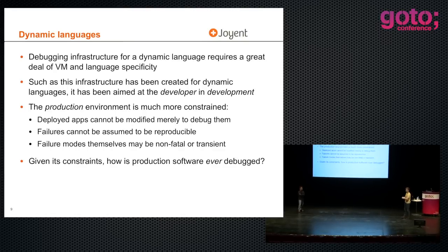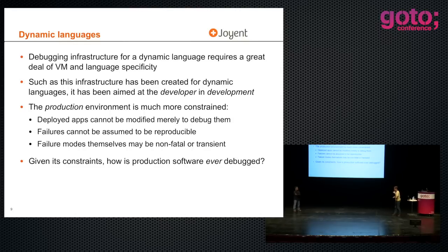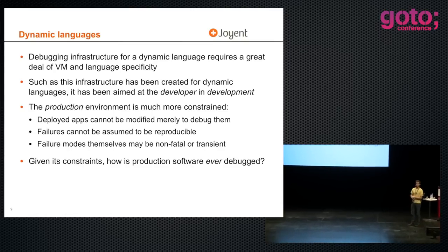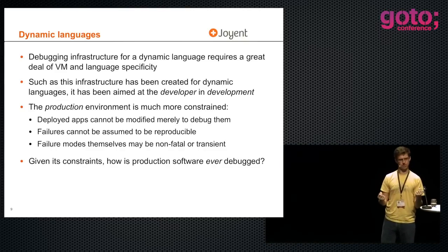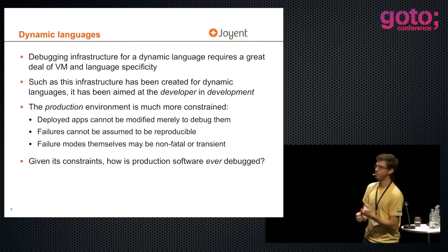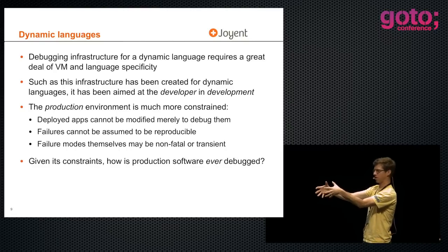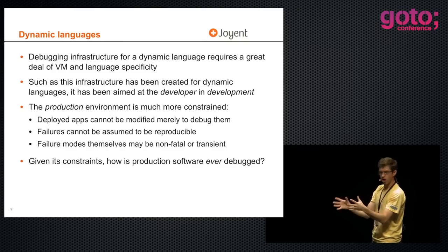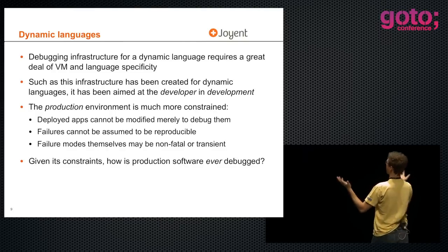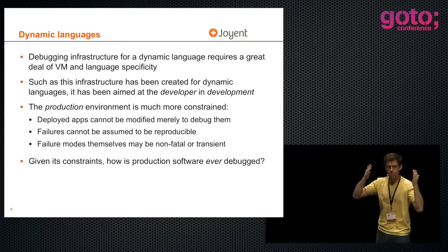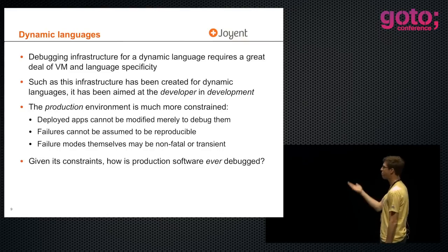Sometimes failures are explosive and you can get a stack trace, but oftentimes they're transient. Or the app just goes into the black hole of misery. Erlang seems to love the black hole of misery — Rabbit is consuming all 16 cores at 100%. It's like: Rabbit, you are executing 32 billion instructions per second. What the hell are you doing? We've got no idea. These are the constraints: failures that are transient, non-reproducible, and we need to be able to understand them.